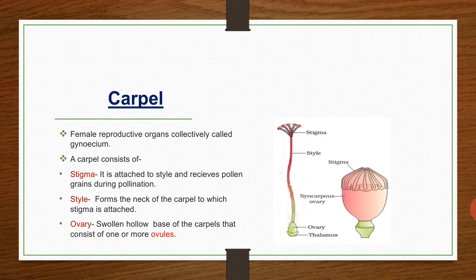The female reproductive organs are collectively called the gynoecium — that is, the gynoecium is the collection of carpels. A carpel consists of stigma, style, and ovary. The stigma is attached to the style and receives pollen grains during pollination. Pollination is the process of transfer of pollen grains from the anther to the stigma. The style forms the neck of the carpel to which the stigma is attached. The ovary is the swollen hollow base of the carpel that consists of one or more ovules.